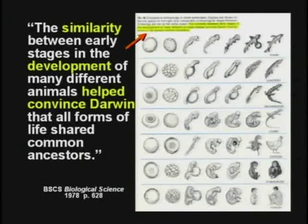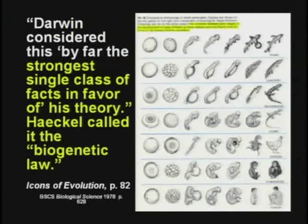This textbook says, the similarity between the early stages of development of many different animals helped convince Darwin that all forms of life shared common ancestors. Darwin considered this the strongest class of facts in favor of his theory. This was the best evidence Darwin knew of for his theory.